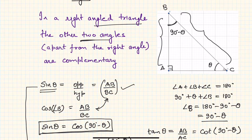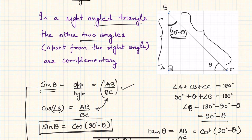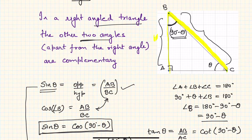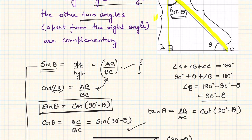Now looking at cos of the angle 90 minus theta: from that perspective, the adjacent side is AB and the hypotenuse is BC. So cos of 90 minus theta also equals AB divided by BC. Since both sin theta and cos(90 minus theta) give the same ratio AB by BC, we conclude: sin theta equals cos(90 minus theta). This is very vital information used throughout trigonometry.